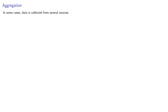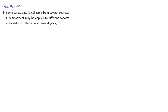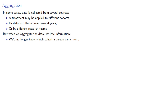In some cases, data is collected from several sources. A treatment may be applied to different cohorts, or data is collected over several years, or by different research teams. But when we aggregate the data, we lose information. We no longer know which cohort a person came from, or what year the data was collected, or which research team gathered the data.